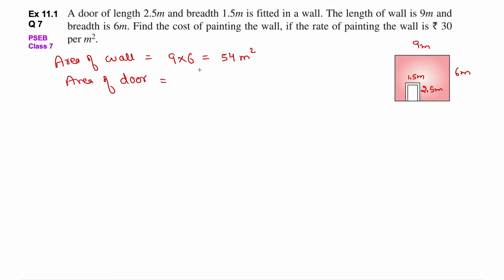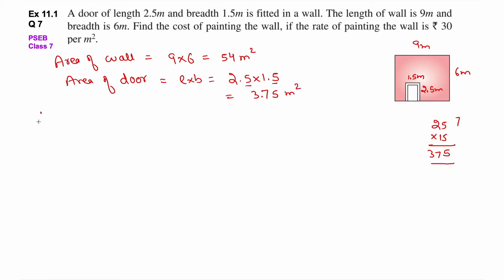अब area of door निकाल लो. Area of door = length × breadth = 2.5 × 1.5. 25 को 15 के साथ multiply करो: 15×5 = 75, 15×2 = 30, total 375. Decimal के बाद total 2 digits हैं, so right से 2 digits छोड़ के decimal लगाओ — 3.75 meter square.